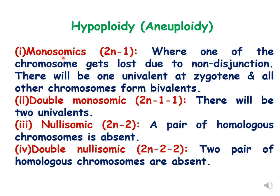Monosomics are represented by 2n minus 1 because they have one chromosome less than the diploid counterparts. One of the chromosomes gets lost due to non-disjunction, resulting in one univalent or azygotene, while all other chromosomes form bivalents. Double monosomics are represented with 2n minus 1 minus 1, where there will be two univalents because two chromosomes are missing from two non-homologous pairs. Nullisomics are when a homologous pair is missing, and double nullisomics are when two homologous pairs are missing.